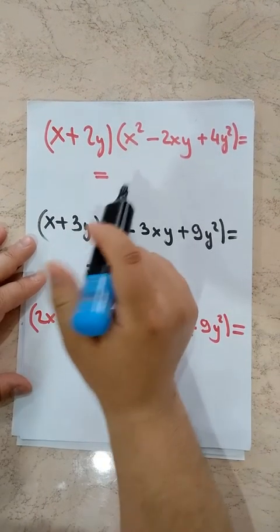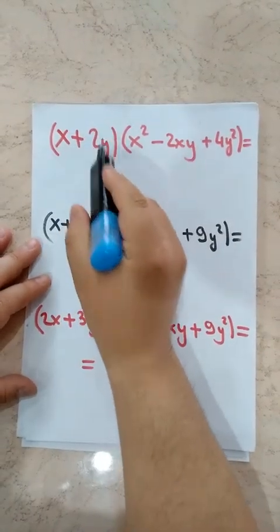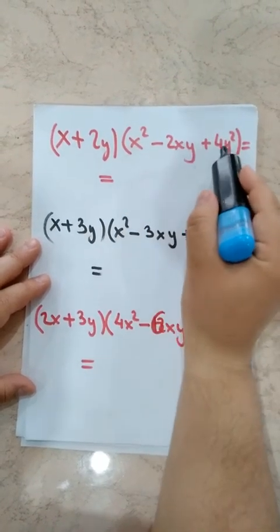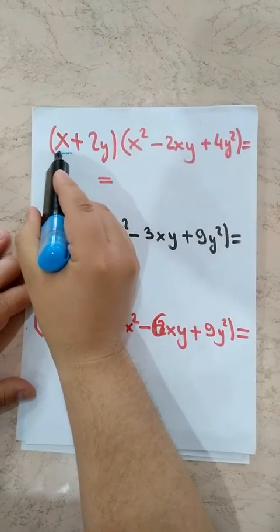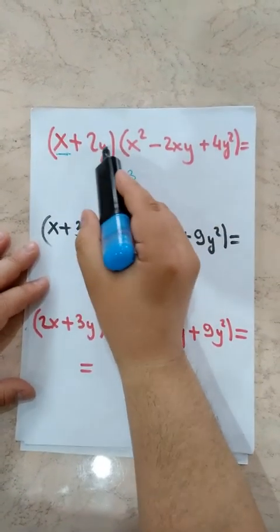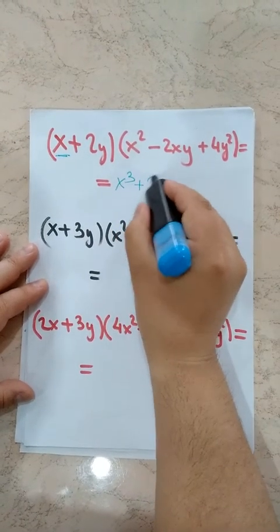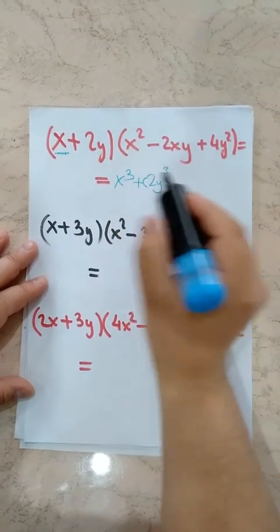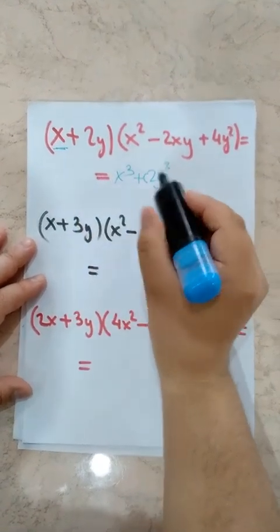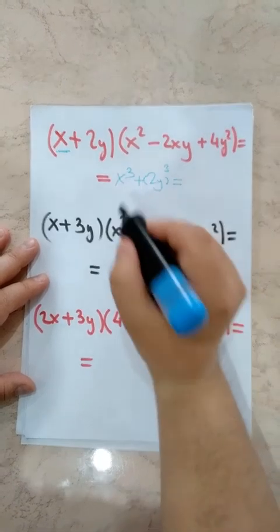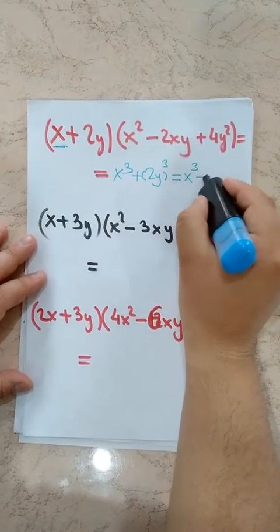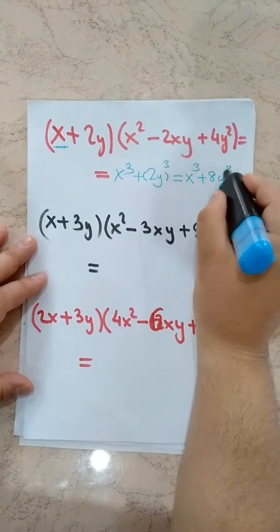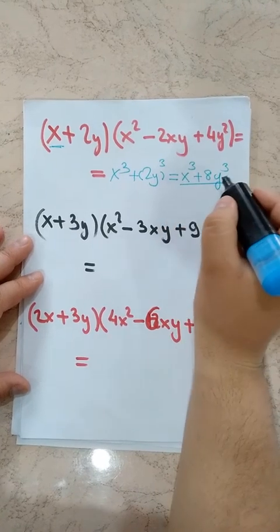Let's try another example: X plus 2Y times X squared minus 2XY plus 4Y squared. Our first term gives X cubed, and the second term is 2Y, so plus 2Y cubed. Opening that up: 2 cubed is 8, so we get X cubed plus 8Y cubed. This is a sum of two cubes.